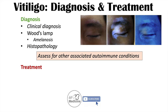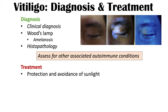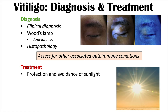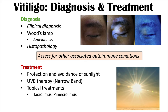For treatment, it is important to protect depigmented skin from sunlight, as it is at high risk of sunburn. To prevent further depigmentation, narrowband UVB therapy can help reduce the destruction of melanocytes. Topical treatments such as the calcineurin inhibitors tacrolimus and pimecrolimus can also be used, as well as corticosteroids in some patients.